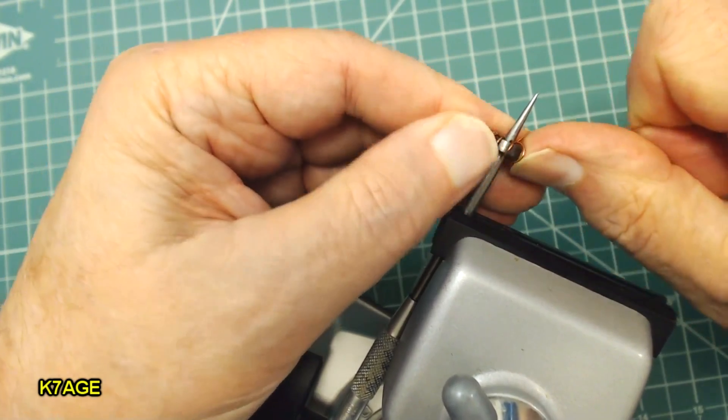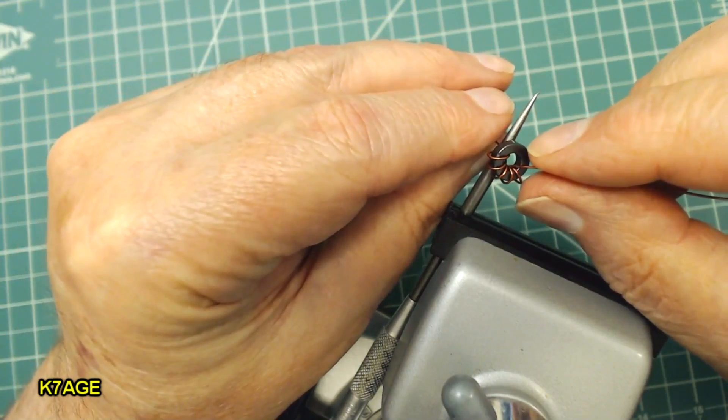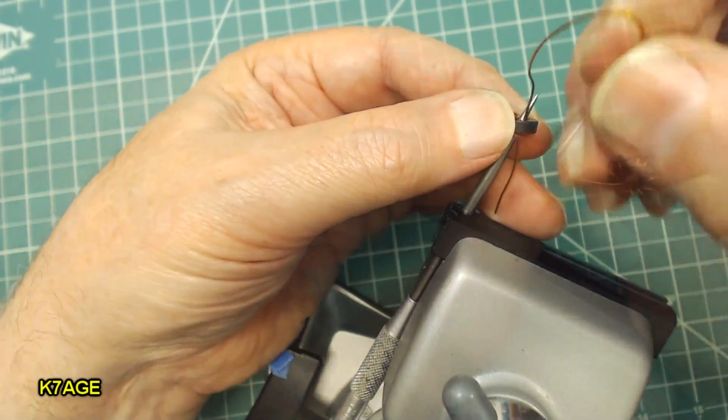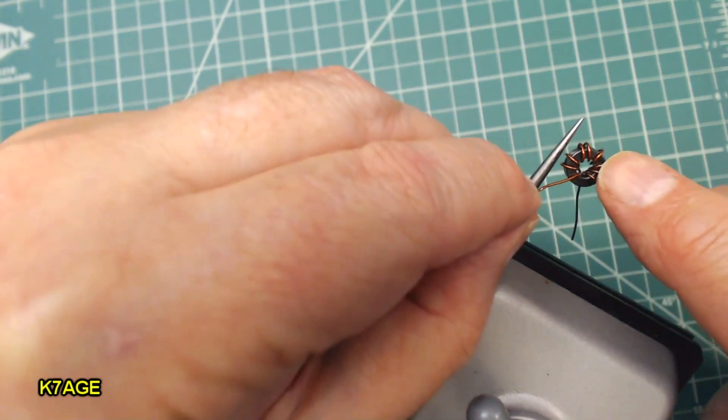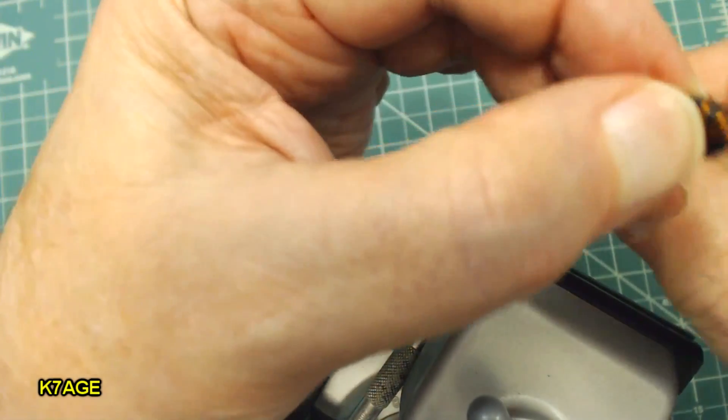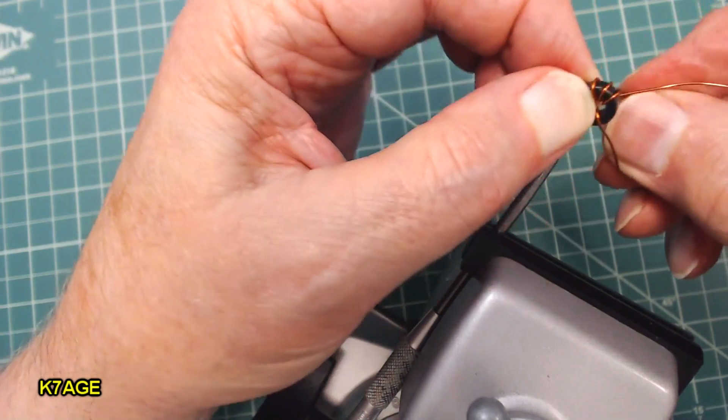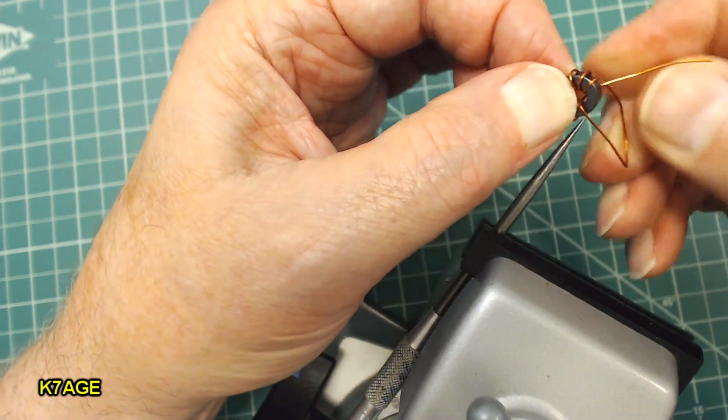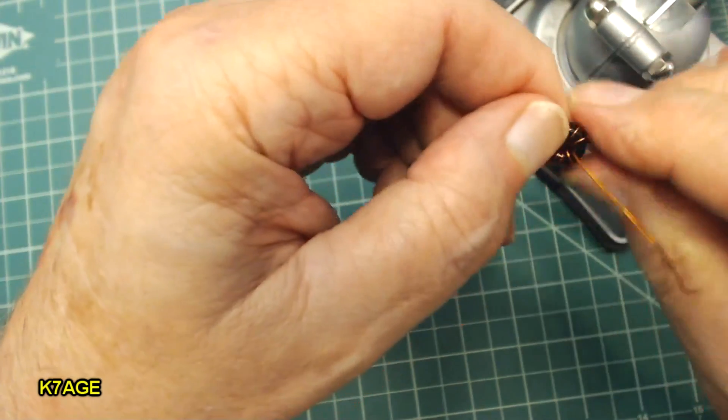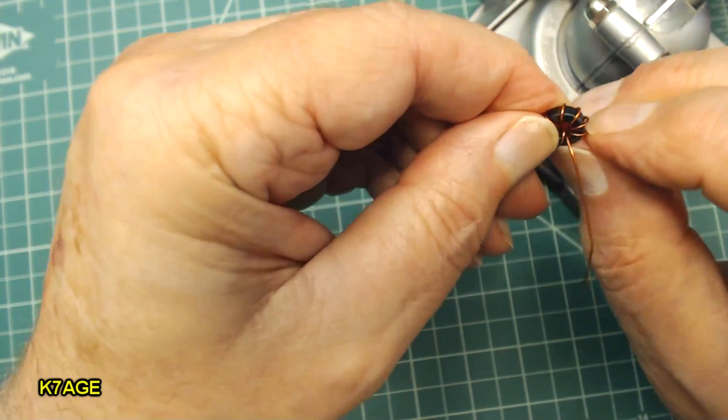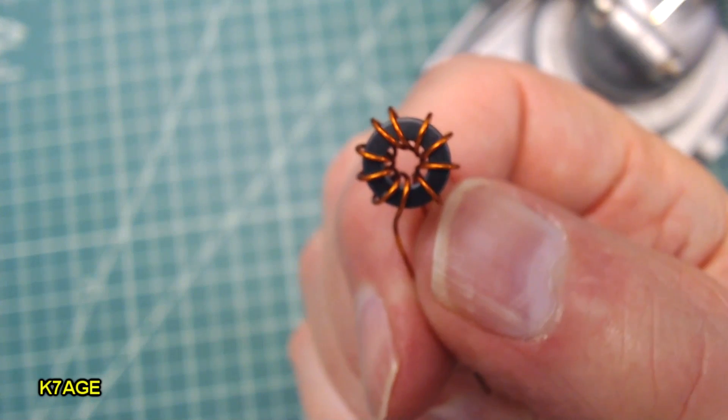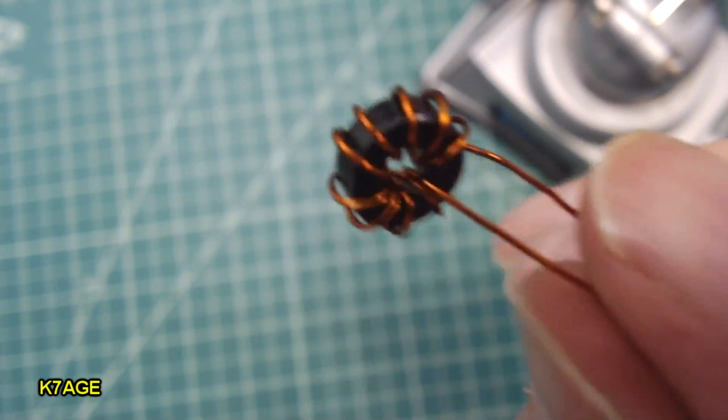10 turns is not real complicated. Let me just check my count here. 1, 2, 3, 4, 5, 6. Okay. Pull that tight. Turn it around. So I have 1, 2, 3, 4, 5, 6, 7, 8, 9. And one last pass through will be 10. And I'll move this out of the way. And I just want to now kind of spread the turns around. Double check that nothing's overlapping. And there is my 10 turns.